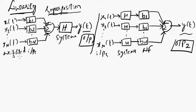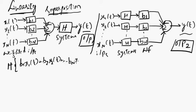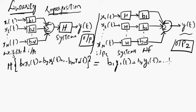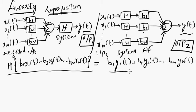A system is said to be linear when the response H of such a system to a weighted sum of inputs — b1*x1(t) + b2*x2(t) + ... + bn*xn(t) — is equal to the same weighted sum of outputs — b1*y1(t) + b2*y2(t) + ... + bn*yn(t). If this equation is equal to that equation, then such a system is said to be linear.